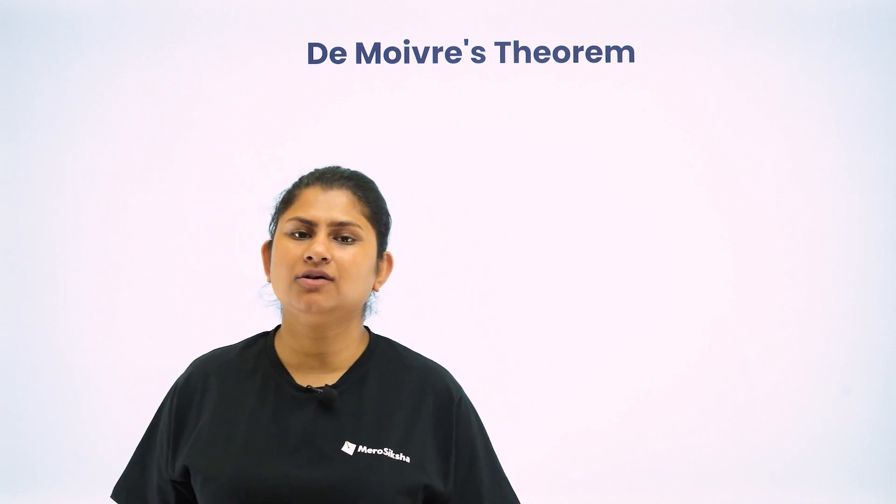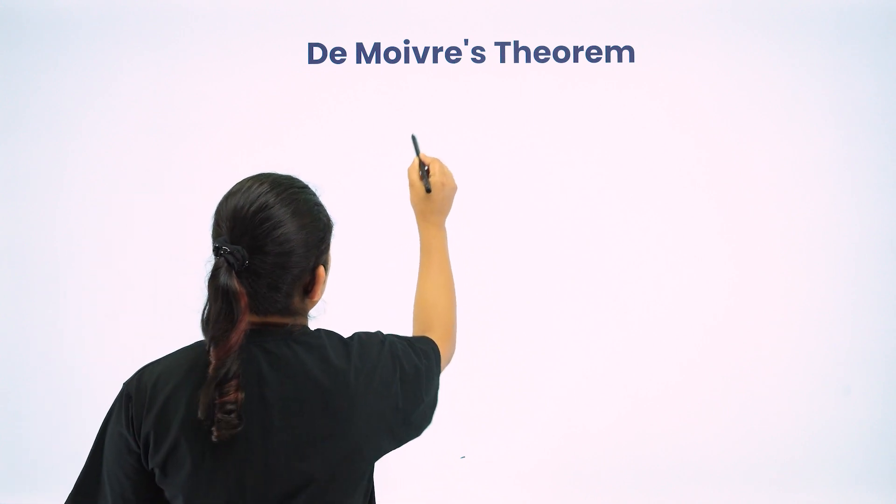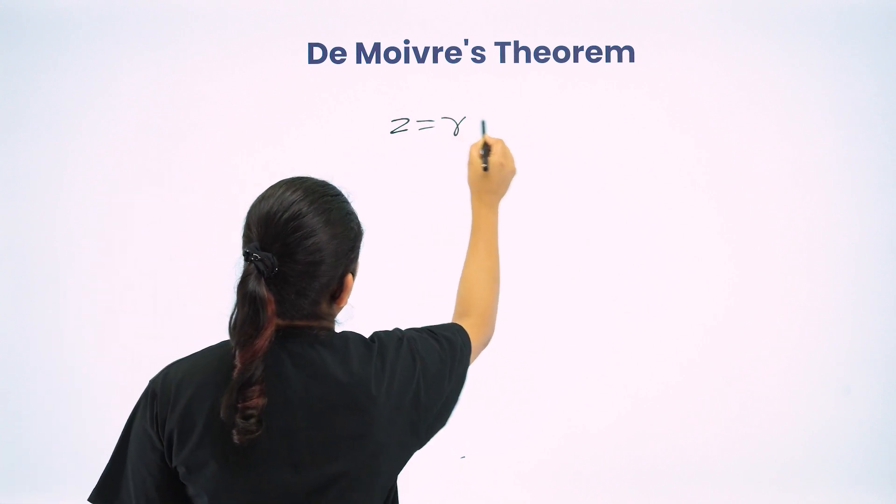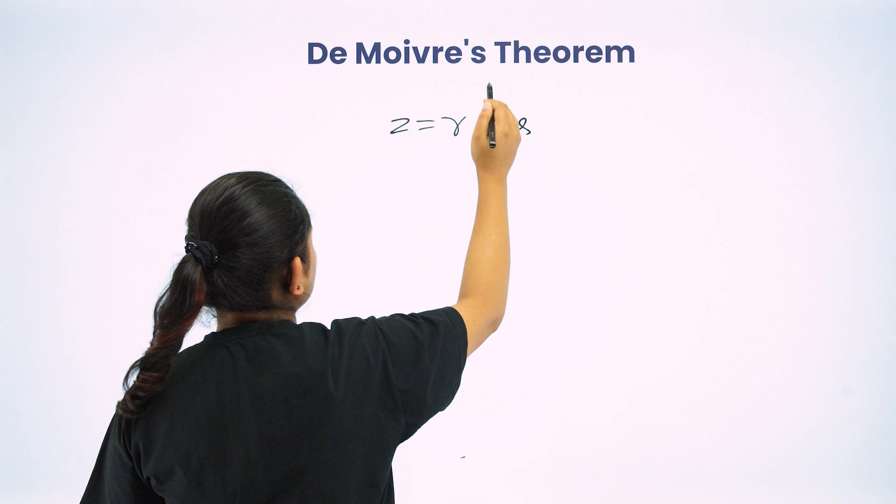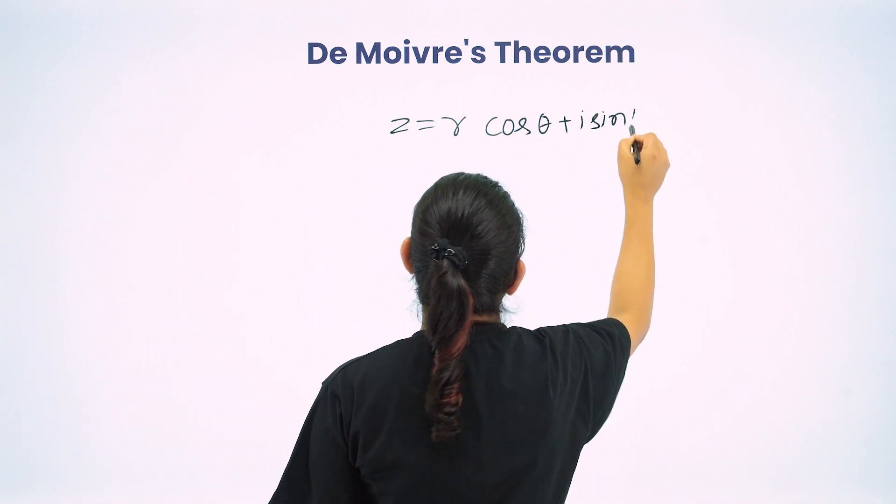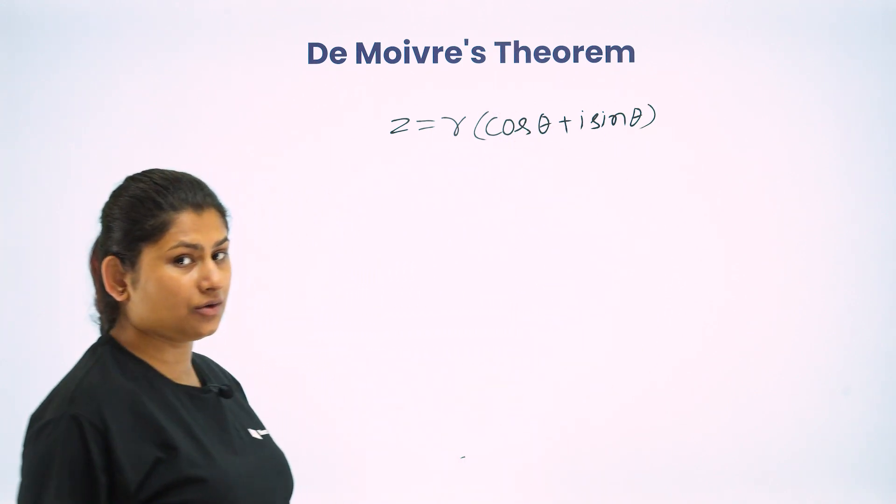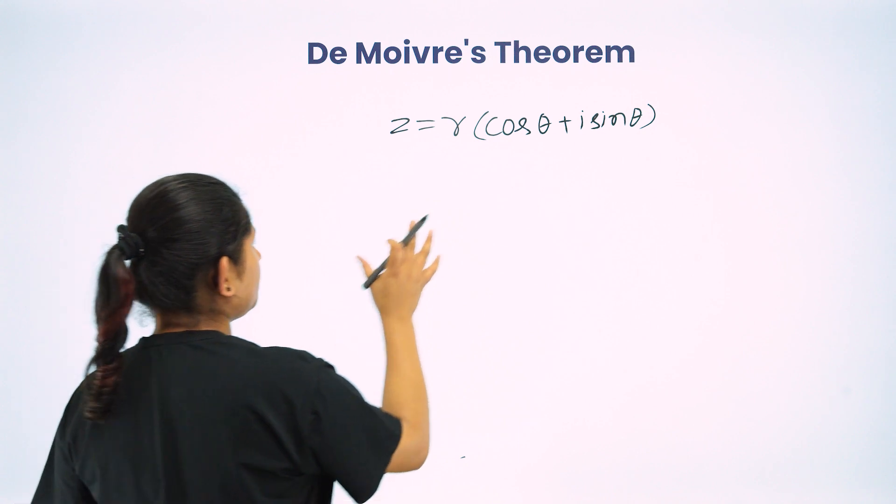So we have a general form. I am going to put a polar form. This equation is for a complex number.